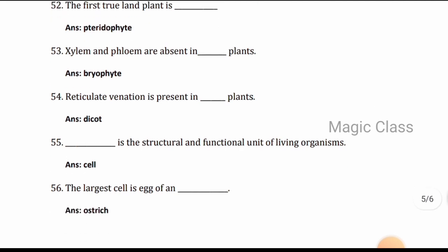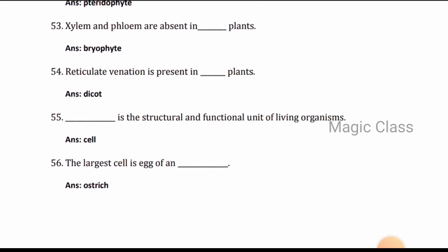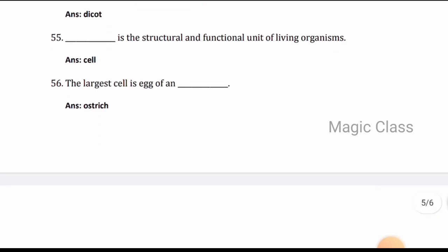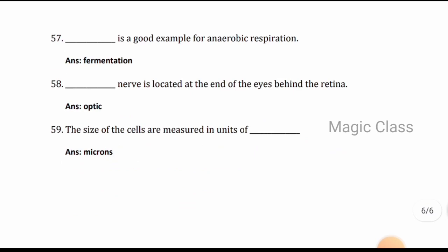Question 54: Reticulate venation is present in dicot plants. Question 55: Cell is the structural and functional unit of living organisms. Question 56: The largest cell is an egg of an ostrich.